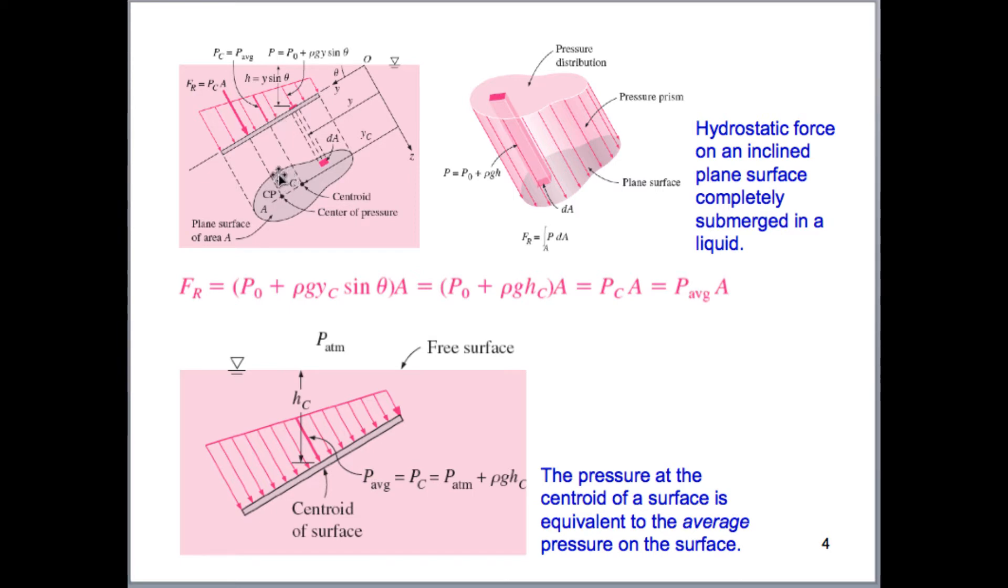And h sub c here is expressed as the distance from the surface of the water to the centroid of our shape. So here in this case, our shape is some bean shaped thing. And the centroid of this is right here. So the distance from right here to the surface of this water is going to be our y sub c. If we take y sub c times sine theta, it would be the same as h sub c, or the distance between the surface of the water and our centroid.